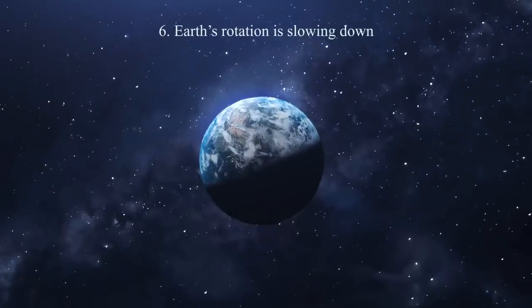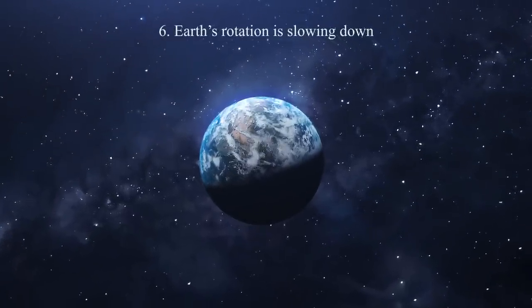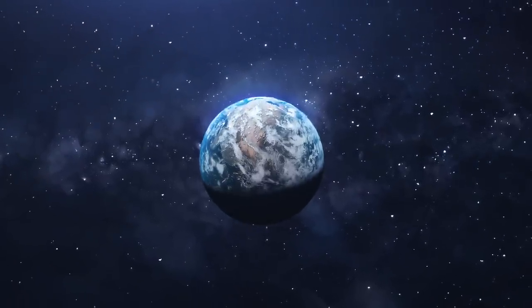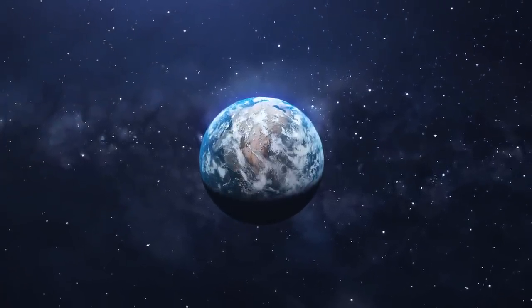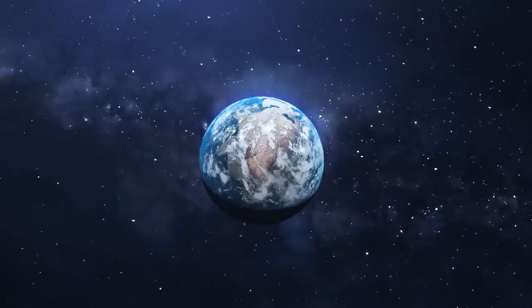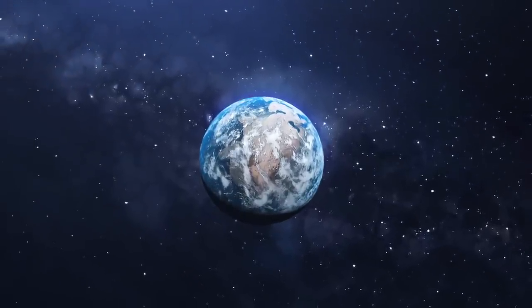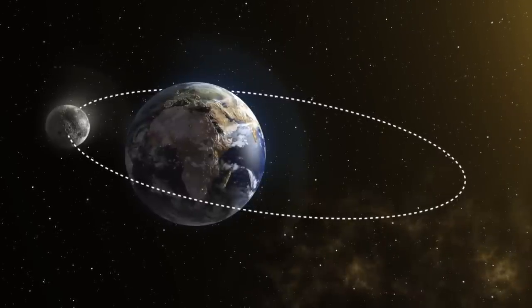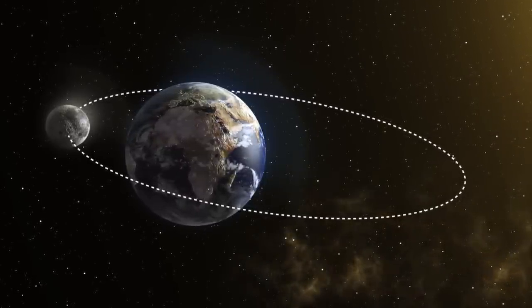6. Earth's Rotation Is Slowing Down. The Earth's rotation on its axis is gradually slowing down, meaning that the length of a day is getting longer over time. This phenomenon is caused by the gravitational pull of the Moon on the Earth, which causes a transfer of energy and momentum that slows down the Earth's rotation.